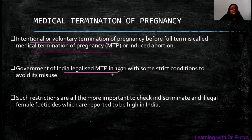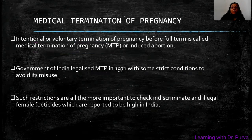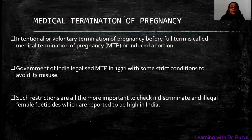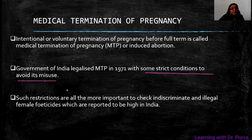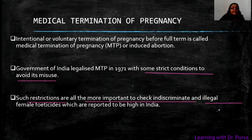As we call it in Hindi, it was known as Garbhpaat. But now it is known under some conditions. The Government of India legalized MTP in 1971 with some strict conditions to avoid its misuse. Because when people know about MTP and know that it is legal, it has also been misused. Such restrictions are important to check indiscriminate and illegal female feticide cases, which have increased.